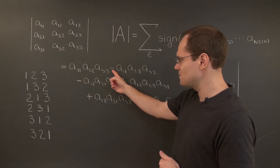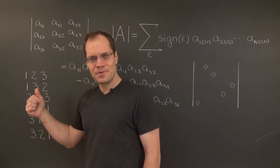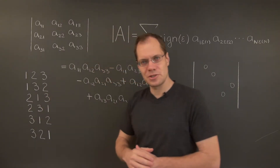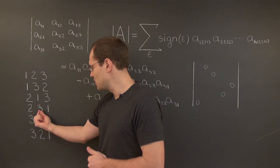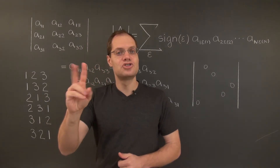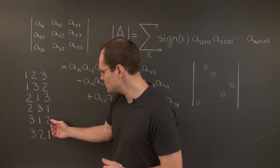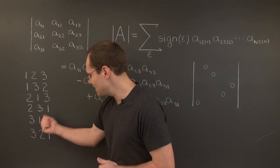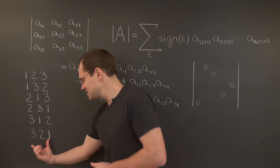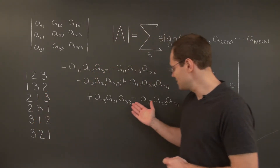2, 1, 3 is also a single switch from 1, 2, 3 — it's an odd permutation, so it's a minus. 2, 3, 1 is 2 switches away from 1, 2, 3: first we swap 1 and 3, then 1 and 2 — so that's a plus. 3, 1, 2: one switch to put the 1 in place, then another switch for 2 and 3 — so it's a plus. And the last one, 3, 2, 1, is a single swap of 1 and 3 away from 1, 2, 3 — so it's an odd permutation with a minus.